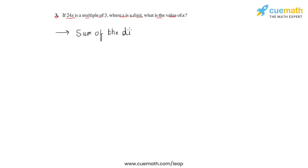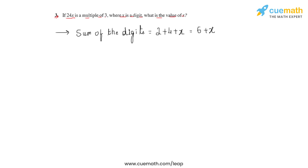To answer this question, let us first consider the sum of the digits of the given number. The sum of the digits would be 2 + 4 + x, which in the next step would become 6 + x. Now we'll have to assign different values of x for which the sum would have to be divisible by three.